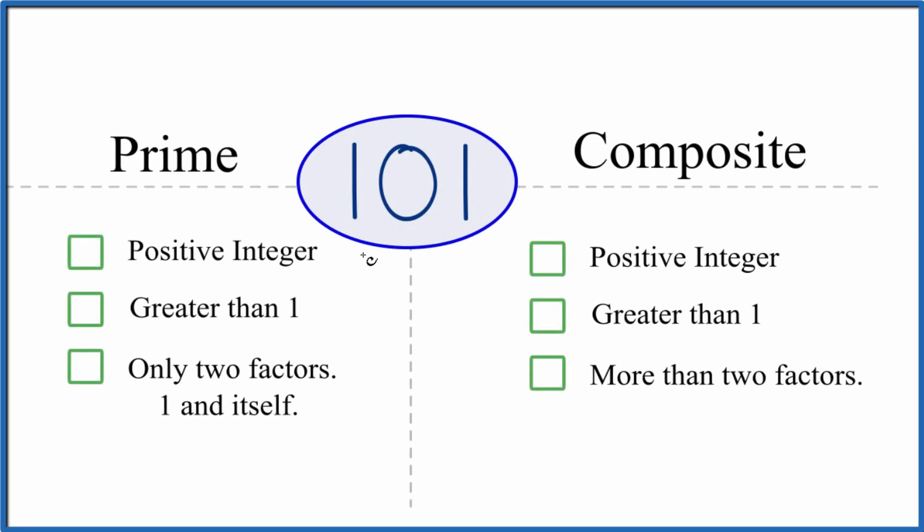Let's see if we can figure out whether 101 is a prime number or a composite number. So let's start with prime.